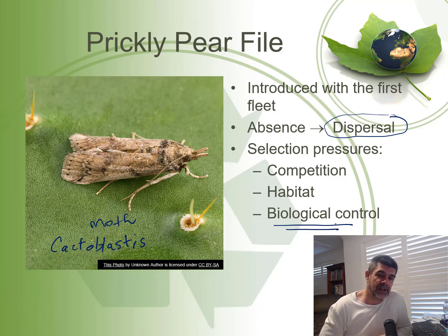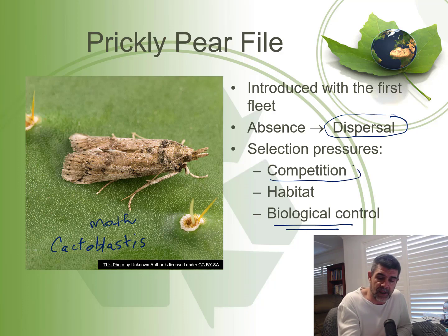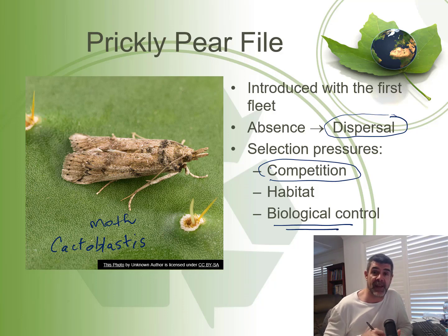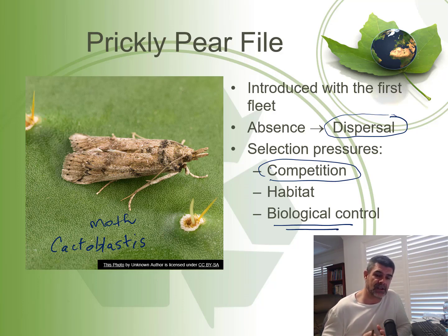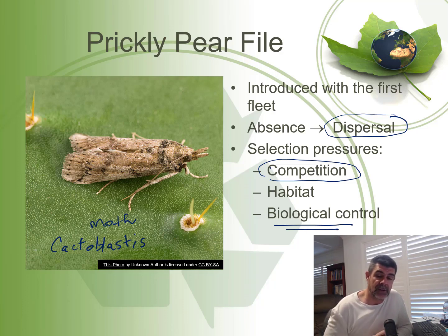Unlike the cane toad, the prickly pear is a plant — it's a producer — so therefore its competition is going to be, generally speaking, the producers that might be competing for light, for water, for space, for gases or other nutrients in the soil. How well this particular species was able to compete, which is obviously pretty well, allowed it to thrive and increase its distribution. Not long after that, we realised we needed to do something about the numbers, and so the moth that we introduced to feed specifically on this species was able to get those numbers back under control.